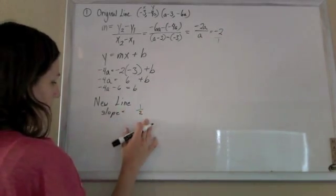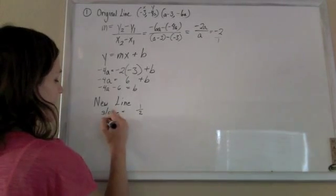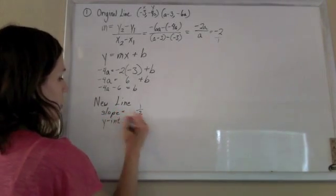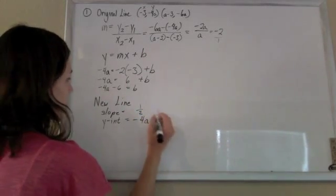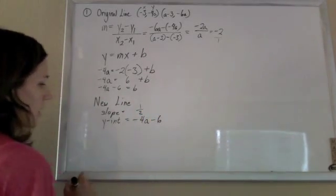So our line has a slope of a half, and it says it has the same y-intercept. So its y-intercept is going to be the same one as the original, so negative 4a minus 6.